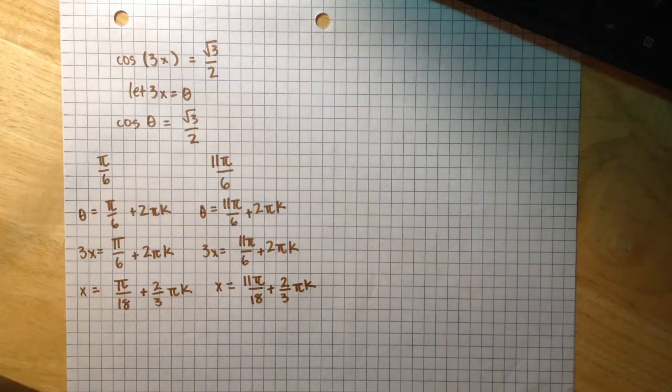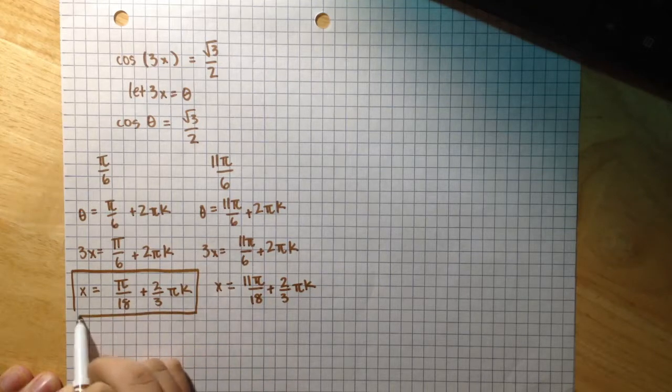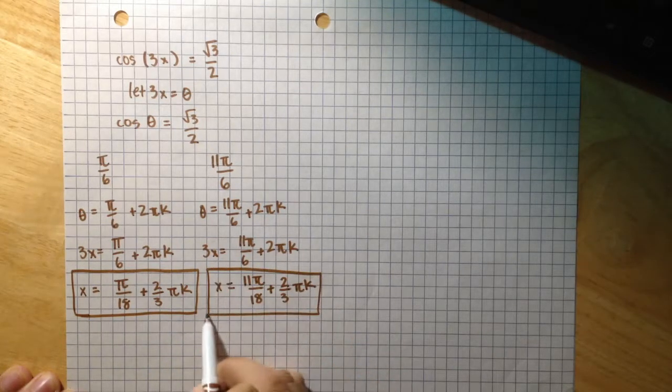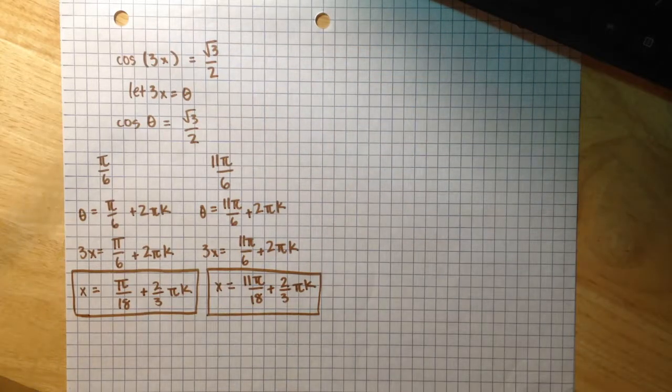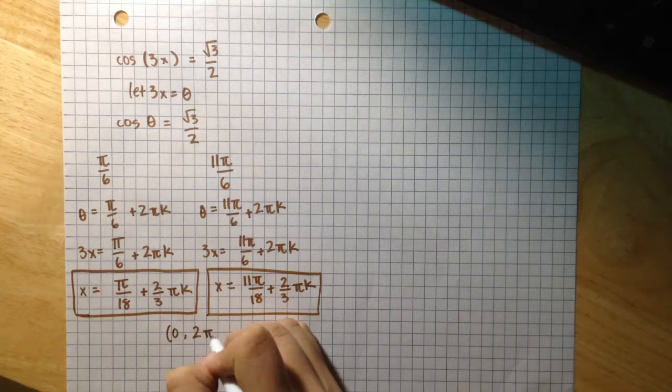So this is how we can write all of the infinitely many solutions that this equation has. But they also asked us to list those solutions which are in the interval 0 to 2π.